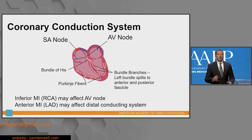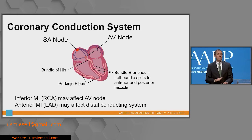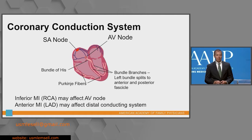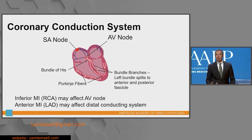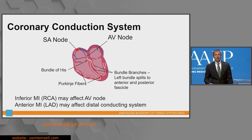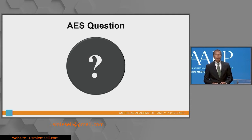From the AV node, conduction exits down to the bundle of His, which then breaks into the bundle branches. The right bundle goes over to the right ventricle. The left bundle branch is fairly short because it quickly breaks into both an anterior and posterior fascicle. The distal conduction system is the Purkinje fibers. The AV node is most commonly supplied by the right coronary artery, which also supplies the inferior wall — so connect an inferior MI with potential AV conduction abnormalities. The anterior wall and Hiss-Purkinje system are supplied by the left anterior descending artery.